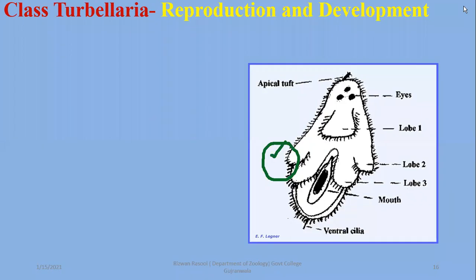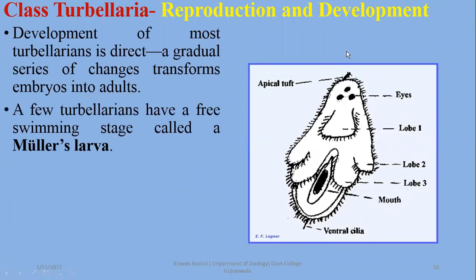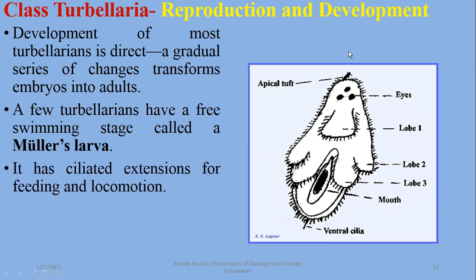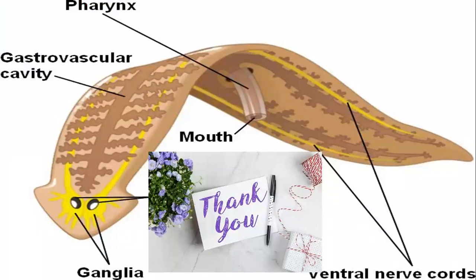There is also a larval stage. The larval stage is named the Müller larva, which is a free-swimming, ciliated larval stage used for feeding and locomotion. They ultimately settle down and develop into adult individuals. That was all about class Turbellaria. In the next lecture, we will discuss Monogenea. Thank you so much for listening.